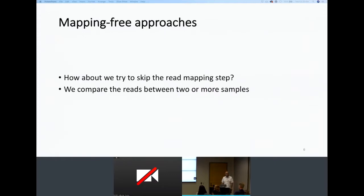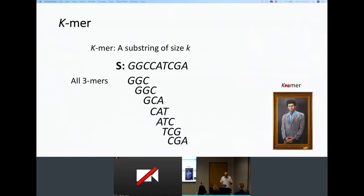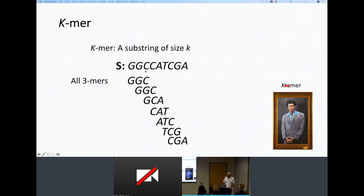An alternative approach is to not map reads to a reference genome. Let's do a mapping-free approach where we compare reads directly and try to make predictions to see if some of these issues can be solved. At the core of a mapping-free approach is the concept of k-mers. K-mers are short sequences — let's say short sequences of three base pairs — that you get from a segment of the genome you're interested in.